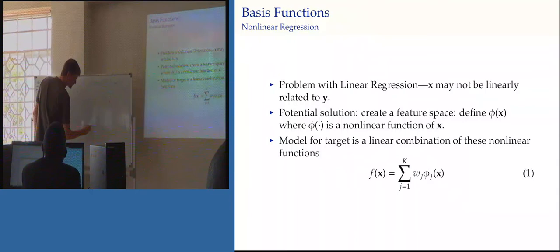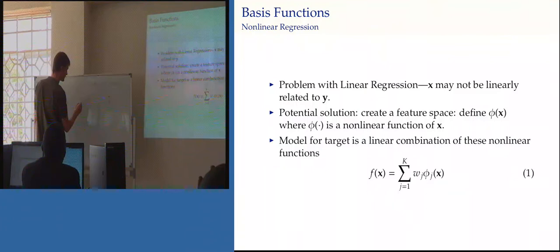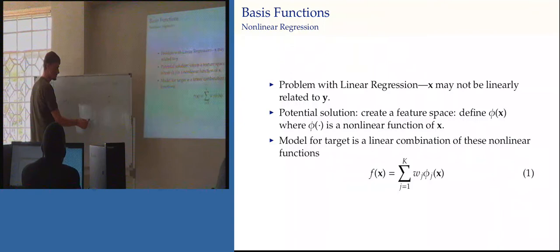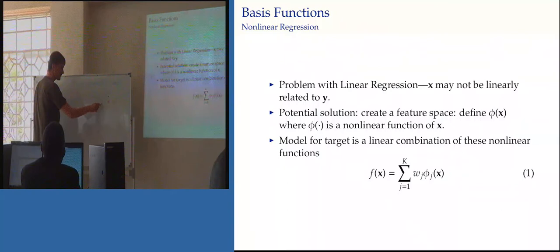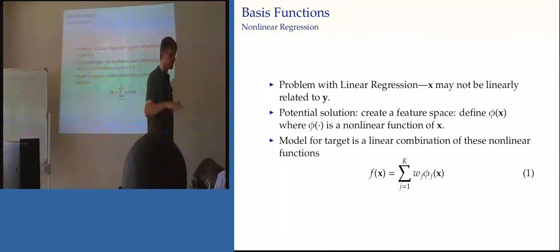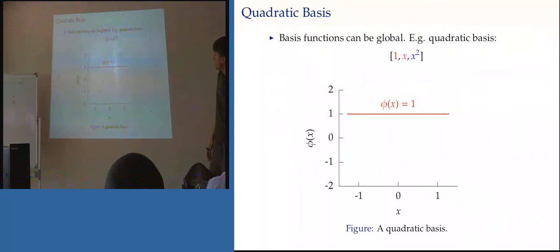If we draw these basis functions as a function of x, phi_1 of x is a straight line through the origin and phi_0 of x is a constant. We can think of these as polynomials in x — phi_1 is a first-order polynomial and phi_0 is a zeroth-order polynomial. What we were doing was scaling and adding these two functions together. Scaling phi_1 allows the regression to twist, and scaling phi_0 moves it up and down.